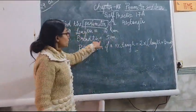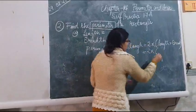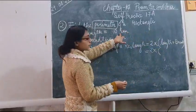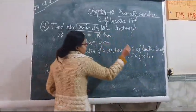Now we will put the values in the formula. 2 into, in the place of length, we will put 10 cm plus in the place of breadth, we will put 5 cm.